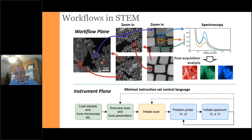SPM can virtually measure everything — magnetic, electronic, and ferroelectric properties. Electron microscopes have a comparable suite: we can map structure down to the atomic level, measure chemical composition through EDX or EELS, and probe quasi-particles. These are highly complementary techniques. What is common between SPM and electron microscopes is how we use them: choosing a sample, loading it, tuning the microscope, finding regions of interest, zooming in and out, and collecting spectral data.